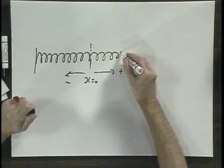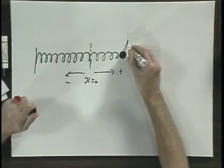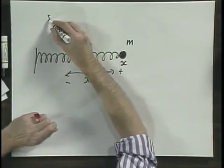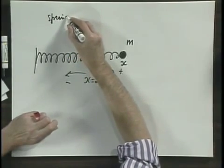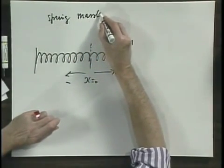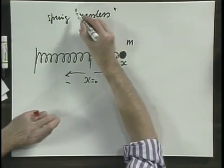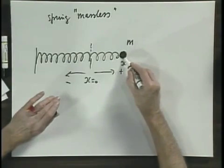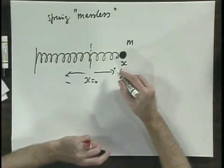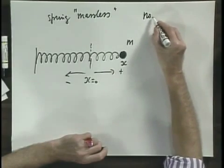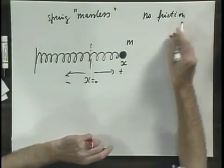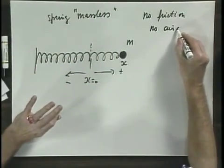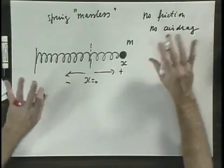I extend the spring with an object of mass m here, and this position equals x. The spring in my approximation is massless — what it means is that the mass of the spring can be neglected compared to the mass of this object. Also, there is no friction of any kind. This could be on a horizontal, frictionless table, and there is no air drag. This is an idealized situation.